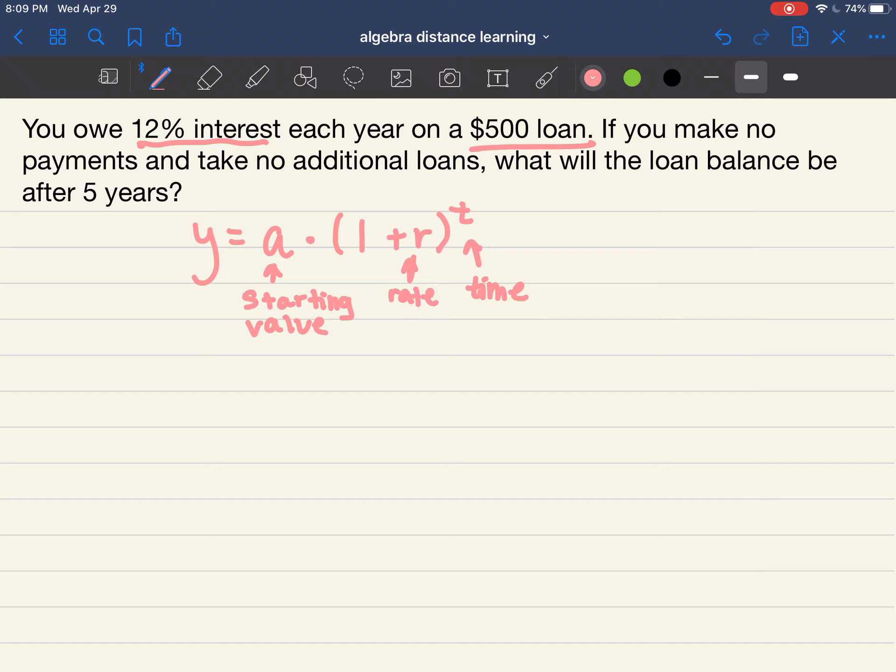So now what we're going to do, we're going to plug in what we know. So y equals, what is our starting value on our loan? Take a minute to reread our problem. I underlined a couple important pieces of information. What's your starting value? Awesome, I agree, it's 500 times 1 plus, let's see what is our rate.